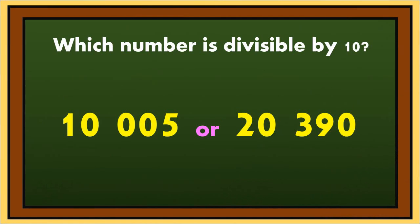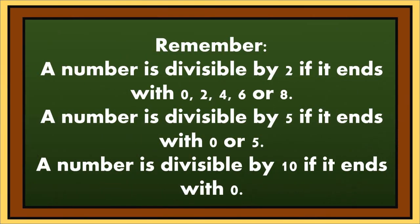Let's answer this. Which number is divisible by 10? Correct. 20,390 is divisible by 10 because it ends with 0. Remember: a number is divisible by 2 if it ends with 0, 2, 4, 6, or 8. A number is divisible by 5 if it ends with 0 or 5. And a number is divisible by 10 if it ends with 0.